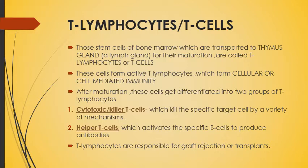After maturation, T lymphocytes get differentiated into two groups. Number one is cytotoxic or killer T cells, which kill specific cells by a variety of mechanisms that will be discussed in higher classes. Number two is helper T cells, which activate specific B cells to produce antibodies. T lymphocytes are also responsible for graft rejection or transplant rejection.